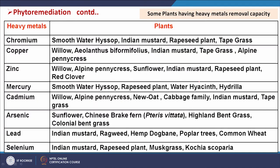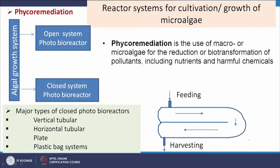Some plants with heavy metal removal capacity are presented here: chromium, copper, zinc, mercury, cadmium, arsenic, lead, and selenium have all been removed using different plant species — specific species are listed for each metal.